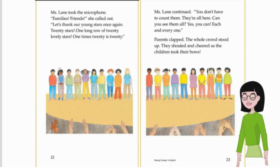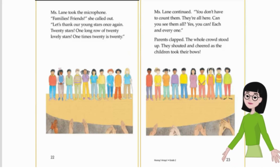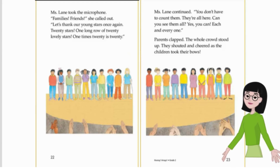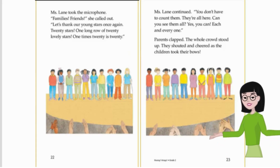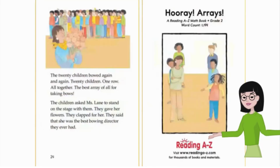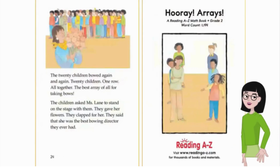'1 times 20 is 20,' Ms. Lane continued. 'You don't have to count them. They're all here. Can you see them all? Yes, you can. Each and every one.' Parents clapped. The whole crowd stood up. They shouted and cheered as the children took their bows. 20 children bowed again and again. 20 children, one row, all together — the best array of all for taking bows.